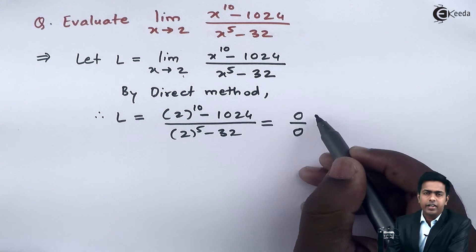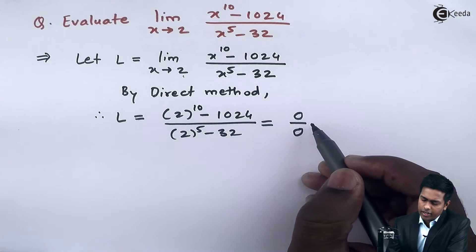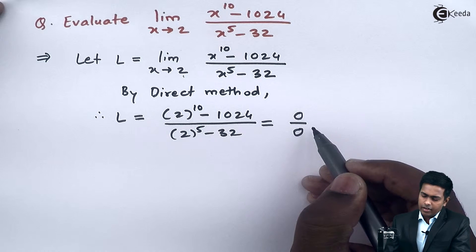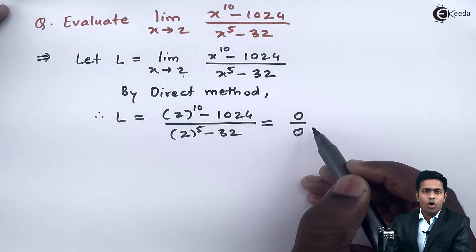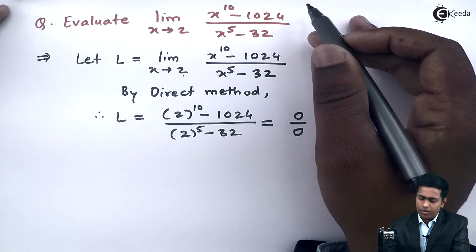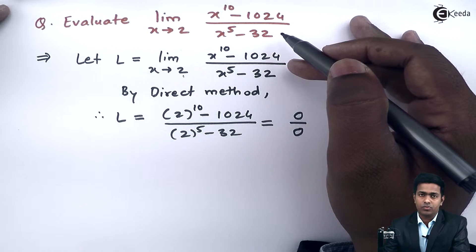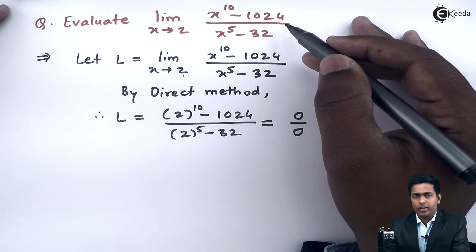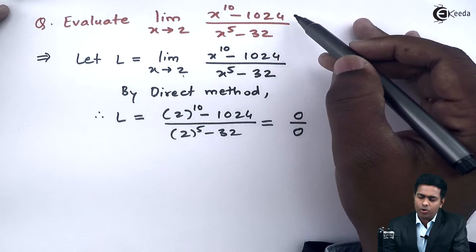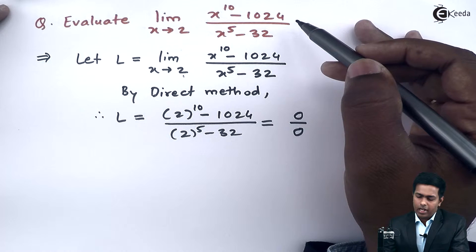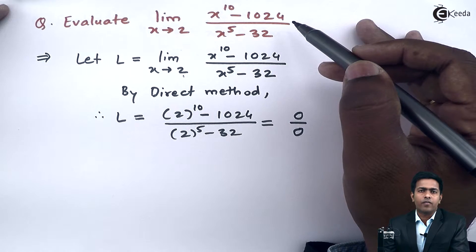Here we are getting an indeterminate form. Whenever we get 0 upon 0 or an indeterminate form in a limit, we look for some other method. To decide the method, let us observe the given question. We have x raised to 10 minus 1024 in the numerator and x raised to 5 minus 32 in the denominator. By substituting 32 as 2 raised to 5 and 1024 as 2 raised to 10, we can find the factors, and hence I will apply the method of factorization.